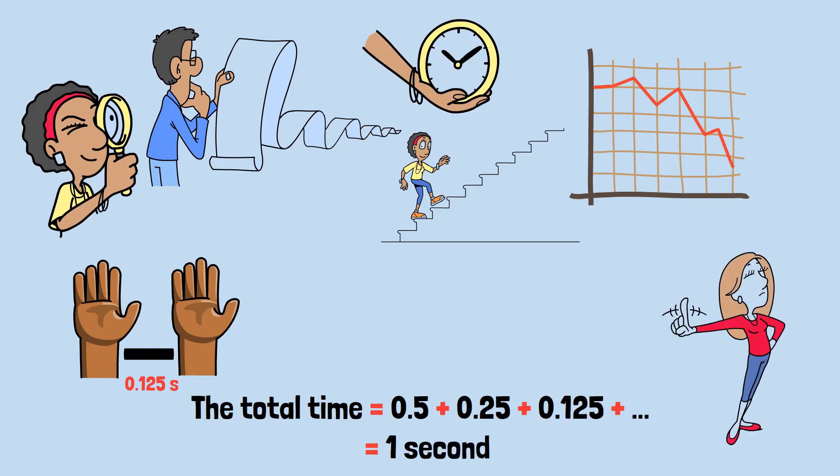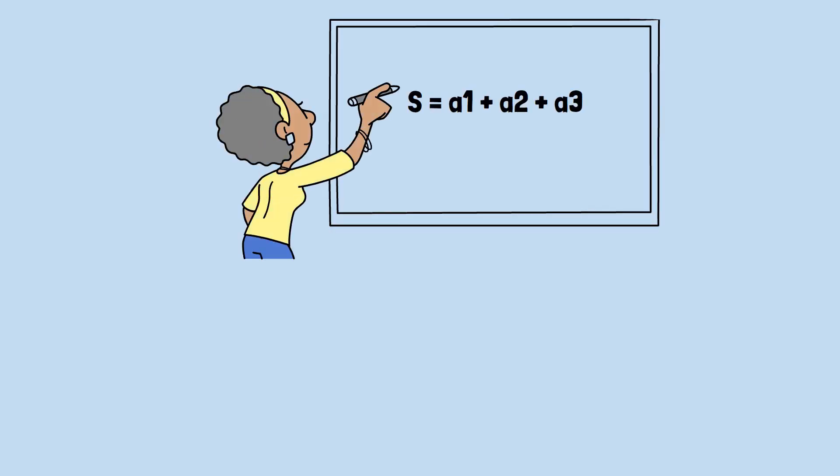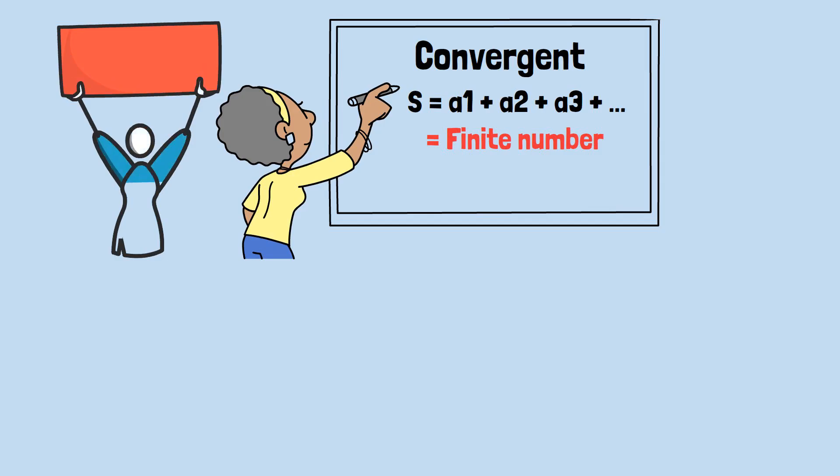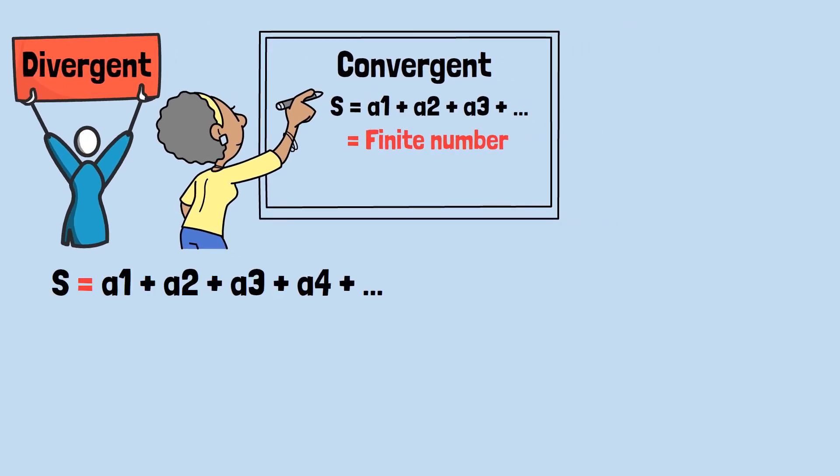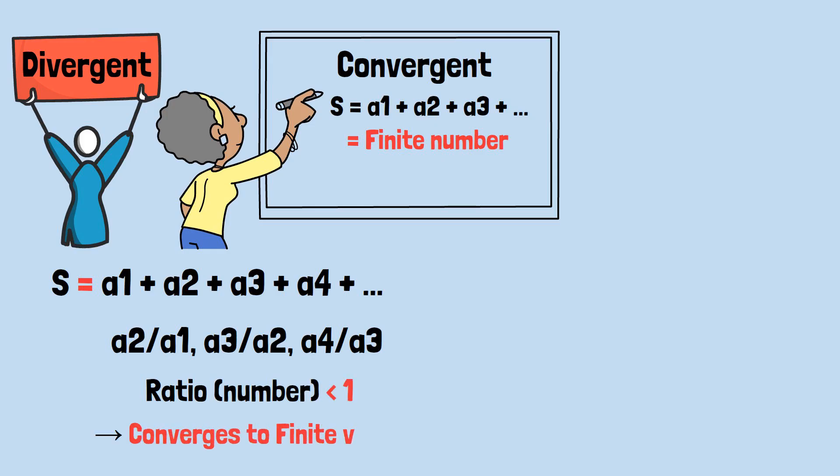Not all infinite series behave so nicely. Mathematicians developed tests to determine when an infinite sum gives a finite answer, called convergent, and when it explodes to infinity, called divergent. One simple test works like this: take any term in your series and divide it by the previous term. If this ratio approaches a number less than one as you go further out in the series, then your sum converges to a finite value.